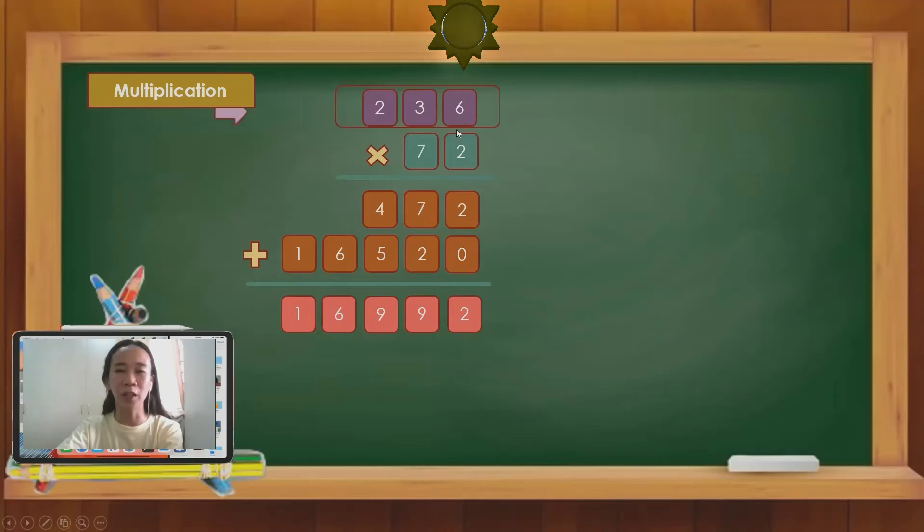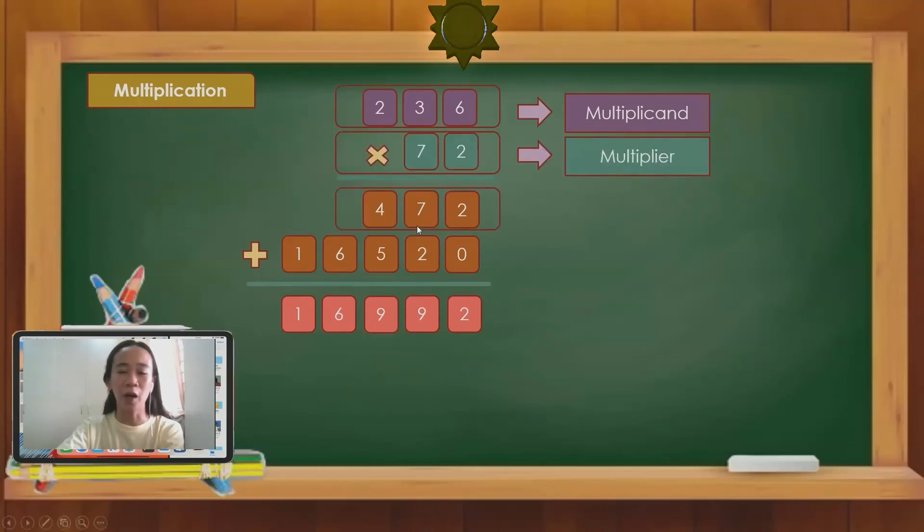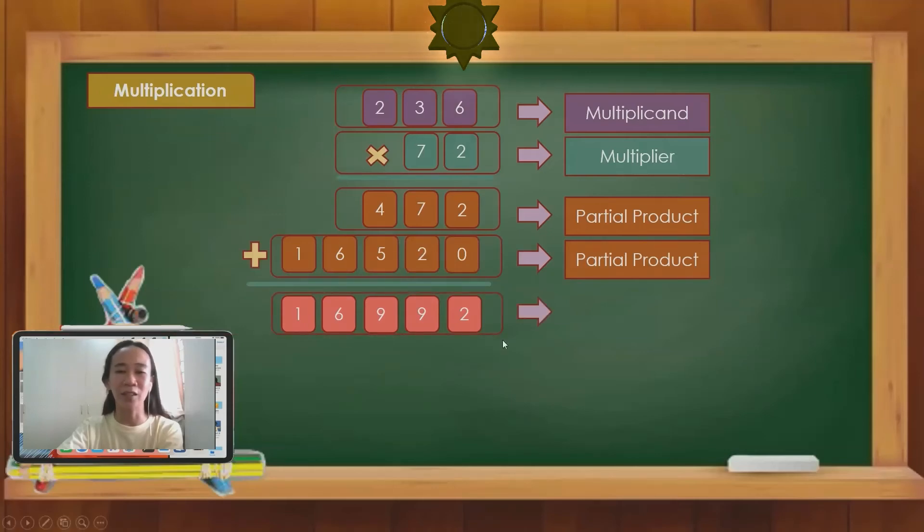So this part is what we call the multiplicand. This part is what we call the multiplier. This part is what we call the partial product. And same with the other one. Another partial product. And our answer is the final product.